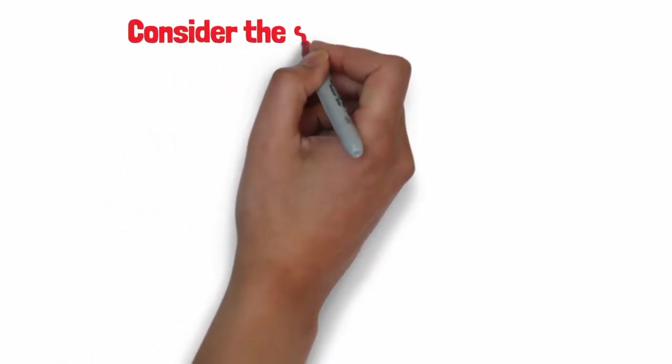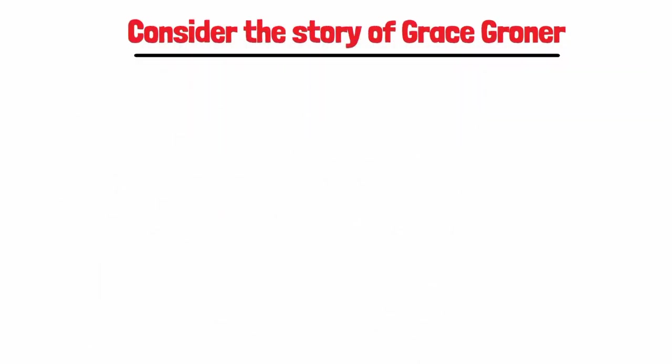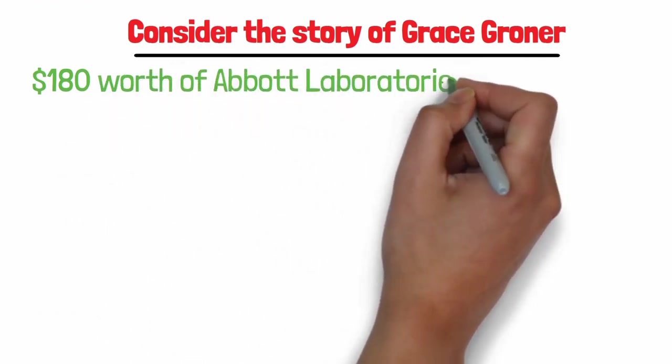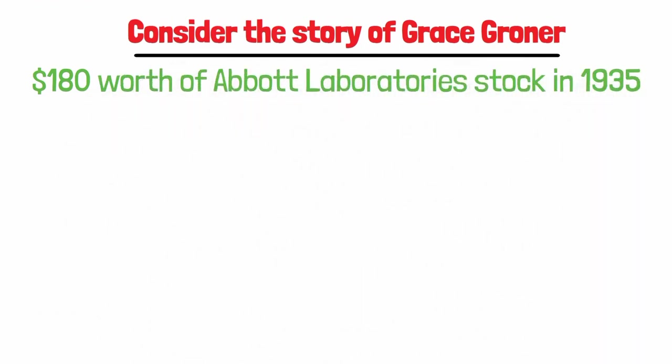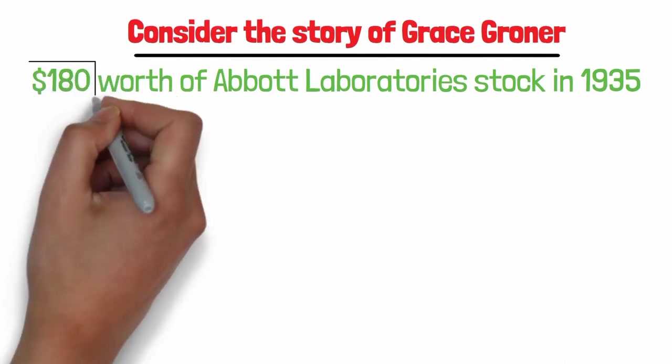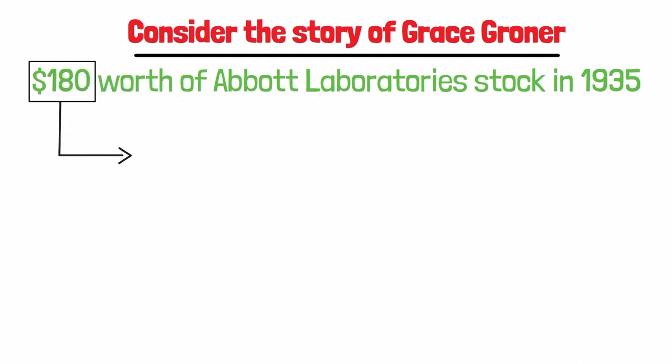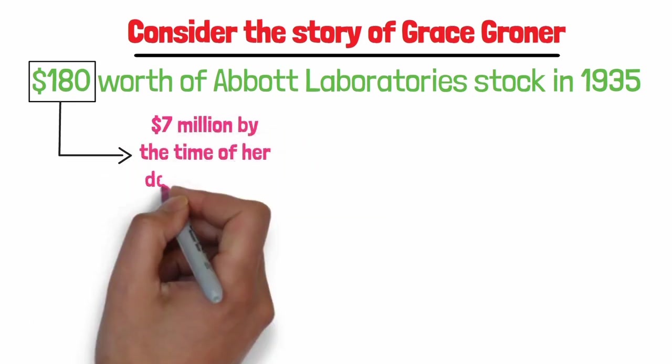Consider the story of Grace Groener. She purchased $180 worth of Abbott Laboratories stock in 1935 and never sold a single share. Due to the power of compounding interest, her investment grew to $7 million by the time of her death in 2010.